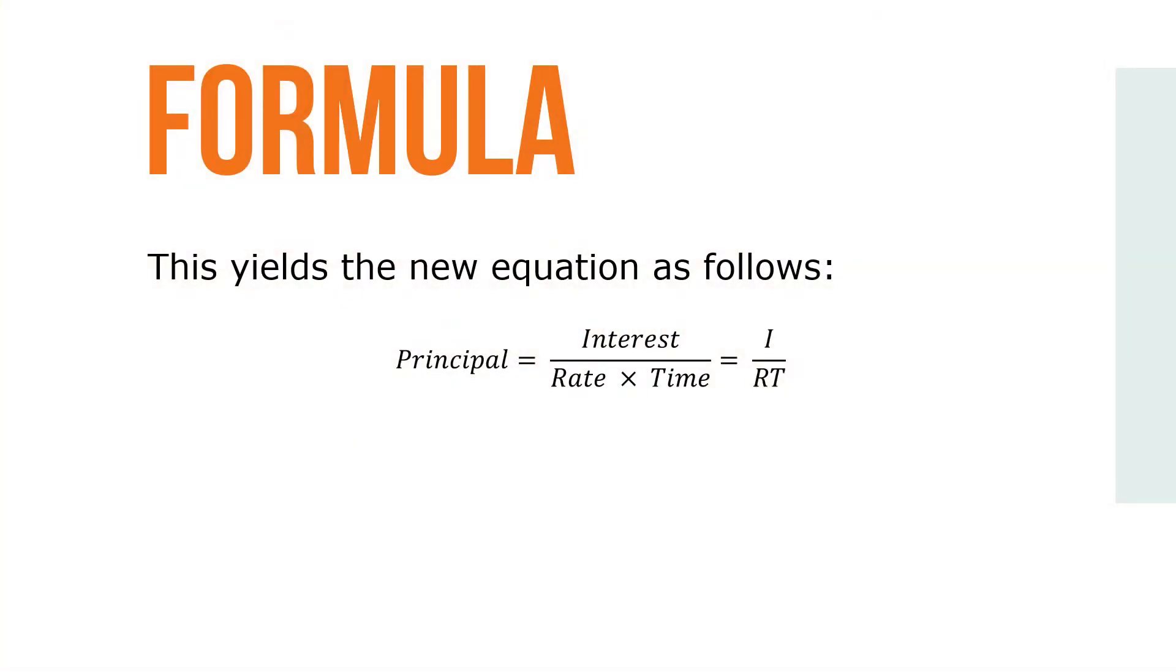This yields the new equation as follows: principal equals interest over rate times time, or P equals I over RT.